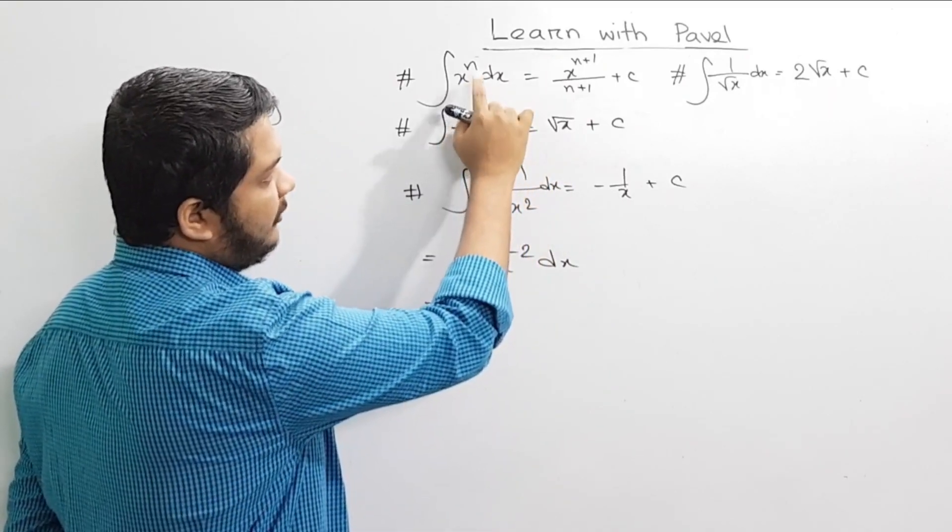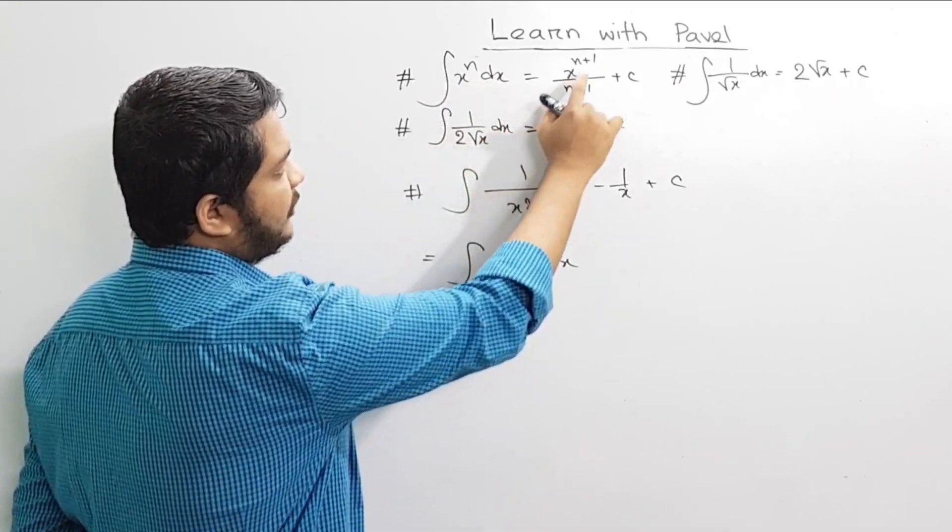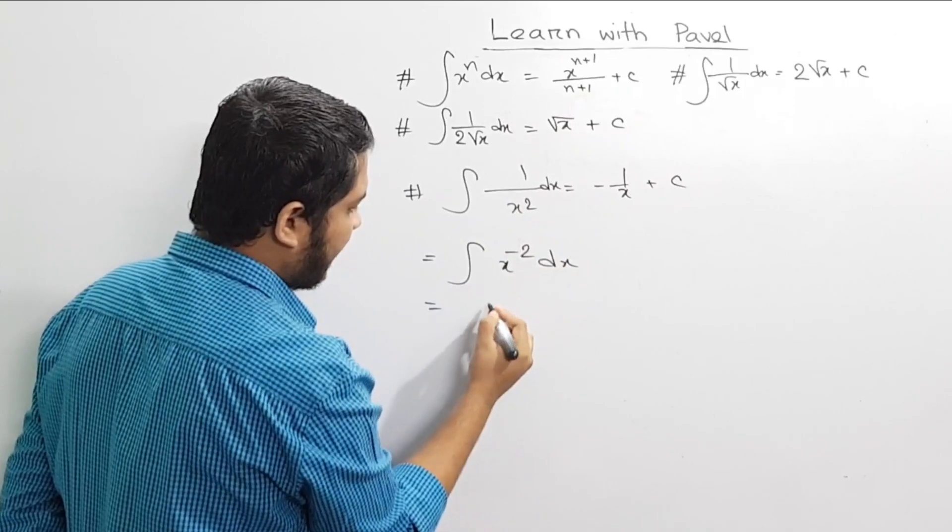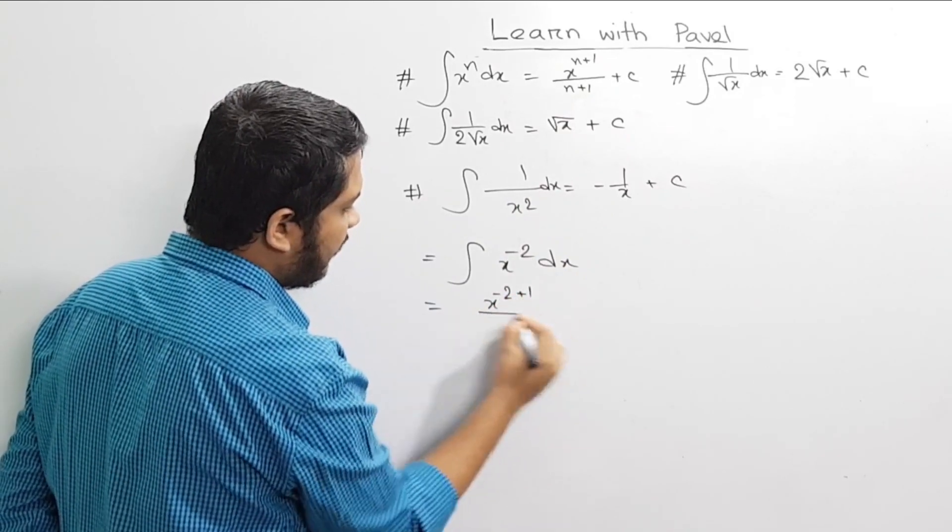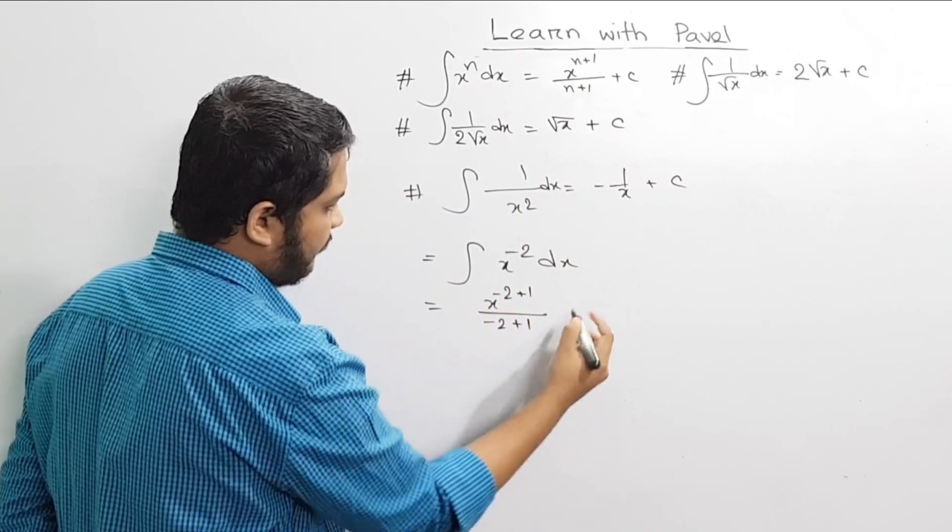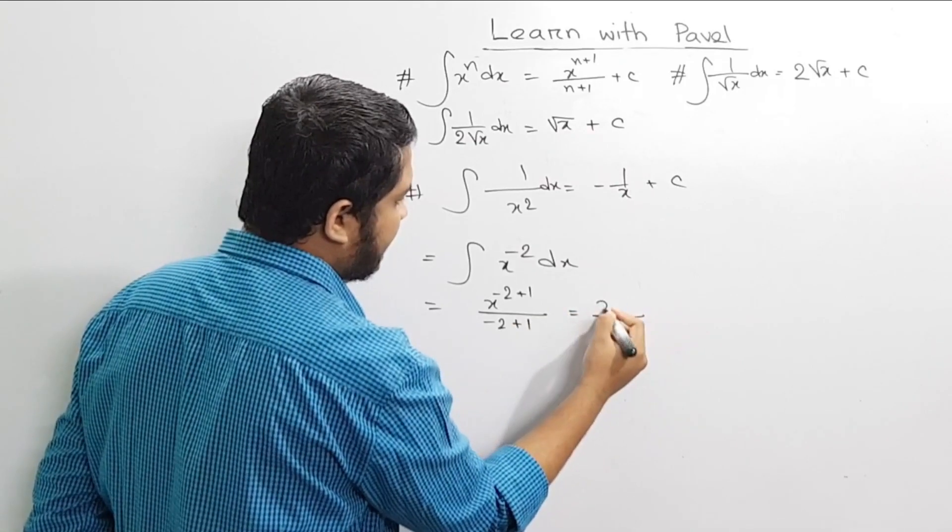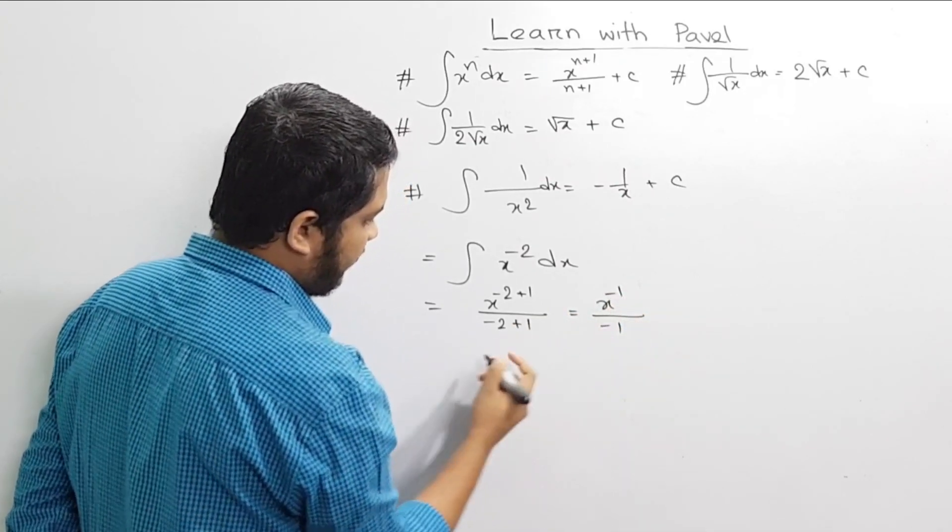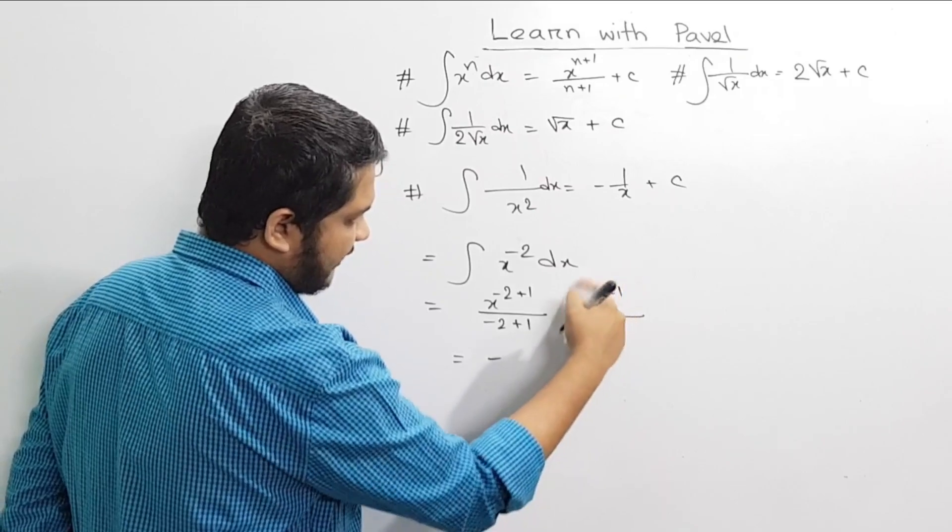Using the formula for integration of x to the power n, which is x to the power n plus 1 divided by n plus 1, we can write this as x to the power minus 2 plus 1 divided by minus 2 plus 1. This gives us x to the power minus 1 divided by minus 1, which equals minus x to the power minus 1.